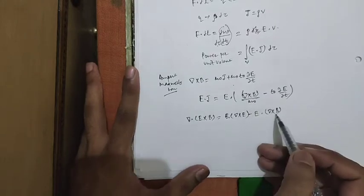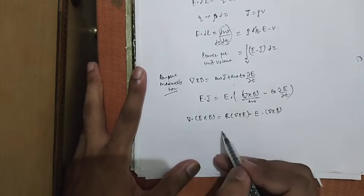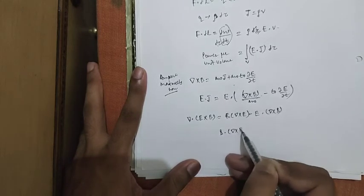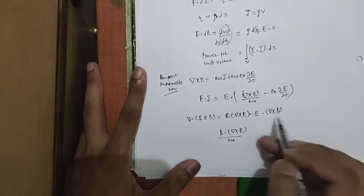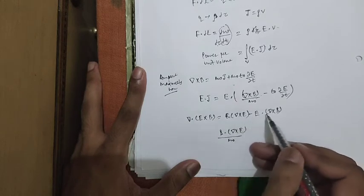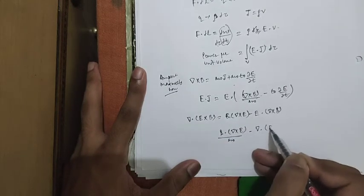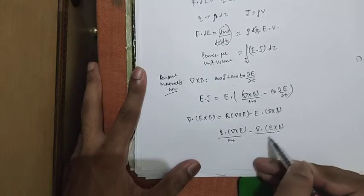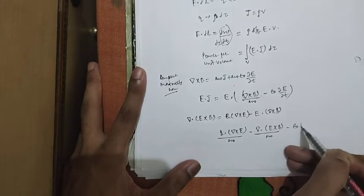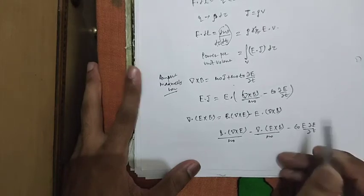Substituting the value of E·(∇ × B), we get E·J = (1/μ₀)[B·(∇ × E)] − (1/μ₀)∇·(E × B) − ε₀ E·(∂E/∂t).